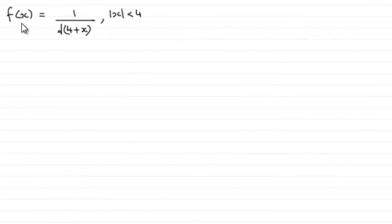Hi, now for this one we're given that f(x) equals 1 over the root of 4 plus x, and x has to be a value between -4 and 4, so mod x is less than 4. That's because this would be invalid if the value of x was outside that range.